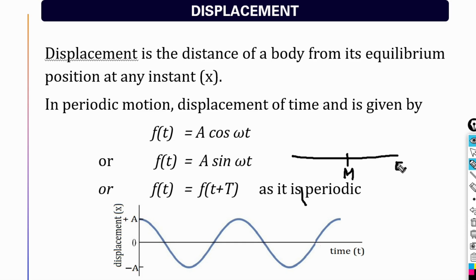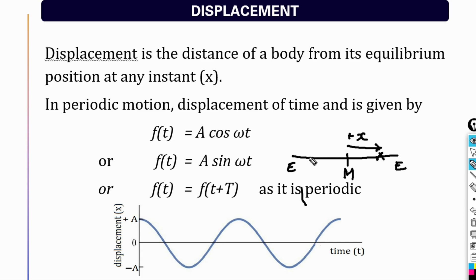The particle moves between the extreme positions and performs to-and-fro motion. Suppose at any instant the object is at some position — we are going to find out how far it is from the equilibrium position. We represent it as x. If x is positive, then obviously the particle is on one side of the equilibrium position. Displacement is measured directionally.